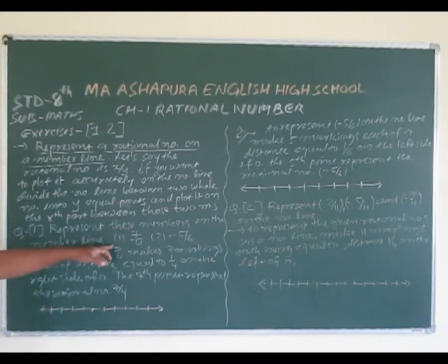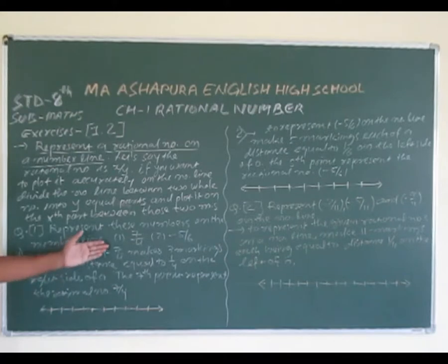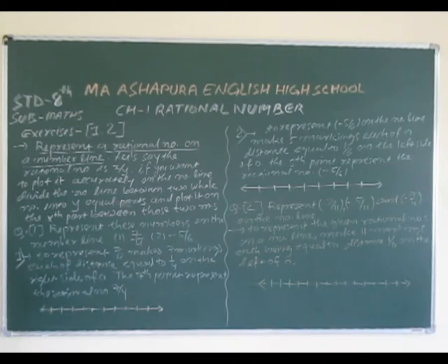The first number is 7 by 4 and the second is minus 5 by 6. To represent 7 by 4, make 7 markings, each of distance equal to 1 by 4.